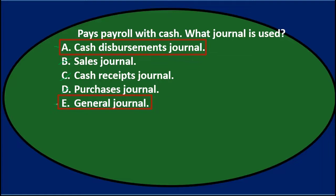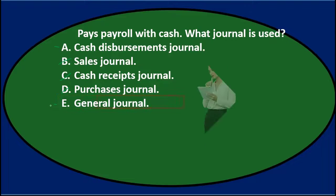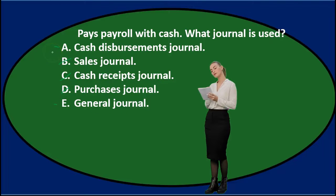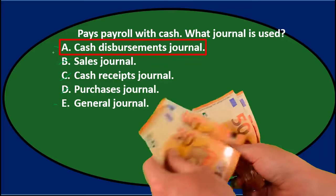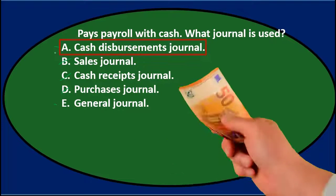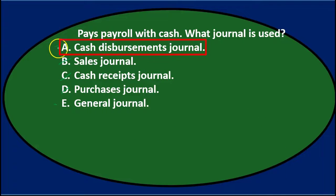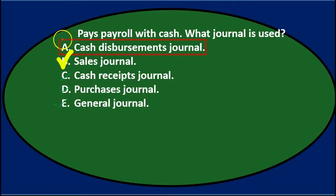Narrowing it down to A and E: cash disbursements journal and general journal. Since we're paying payroll with cash, and the cash disbursements journal covers any time cash goes out, it can handle this transaction. The general journal would only apply if no other journal were appropriate. So the answer is A, cash disbursements journal.